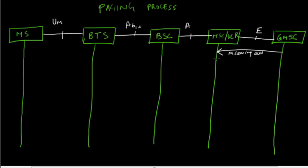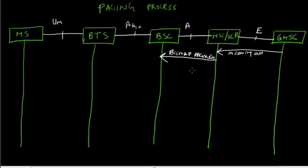The MSC VLR looks at the LAI — the location area identity of the mobile — and sends a BSS base station subsystem mobile application part message to all the BSSs that are part of the location area. This BSS MAP paging message is a layer 3 message, the protocol used between BSC and MSC to communicate.